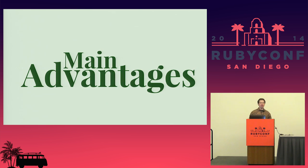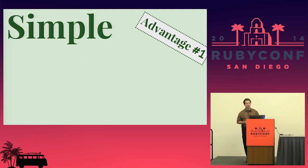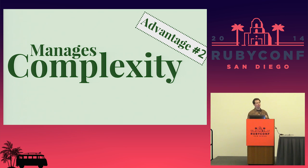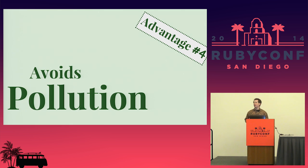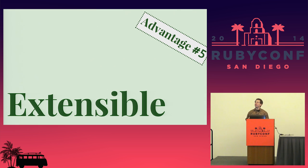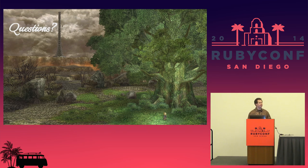Let me review the main advantages of using Roda. For simple web applications, Roda is about as simple to use as Sinatra and much simpler than Rails, with a significantly smaller and simpler codebase. As your application gets more complex, Roda manages that complexity better than Sinatra while remaining much less complex than Rails. Roda performs significantly better than Sinatra or Rails and scales much better for truly large sites. Roda does not pollute your namespaces, and because of its Sequel-based plugin system, it is very extensible. That concludes this presentation — thank you all for attending, and I'm happy to answer any questions about Roda.